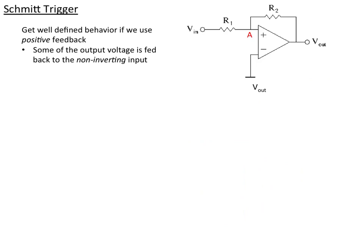We can get well-defined behavior if we use positive feedback. Remember, when we had negative feedback, we took some of the output and fed it to the negative side. Here we're going to feed it back to the positive side of the input. In this case, node A, because this is positive feedback, doesn't have to be at zero voltage. It's not a virtual ground like before. There's nothing making it zero.